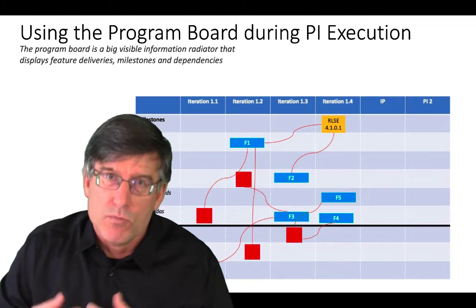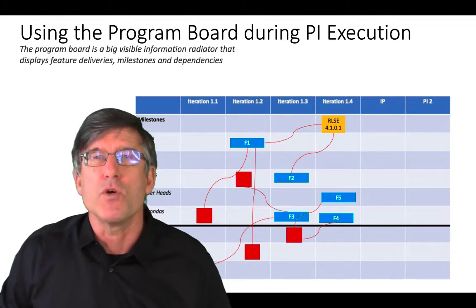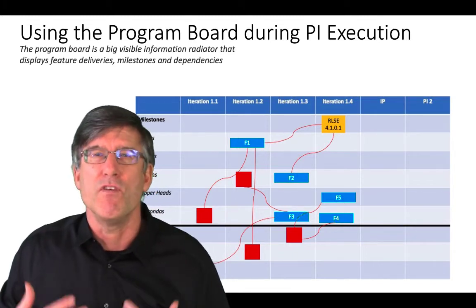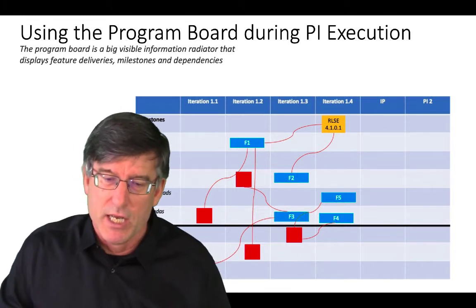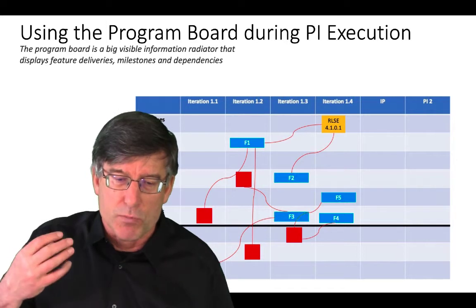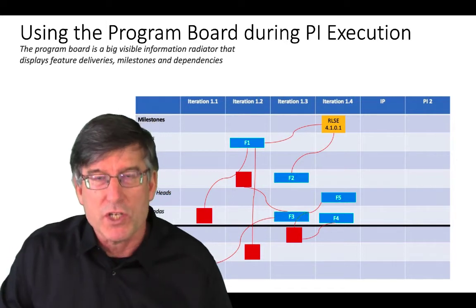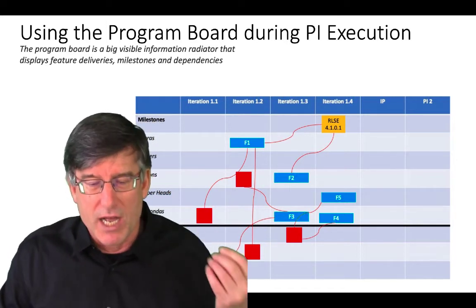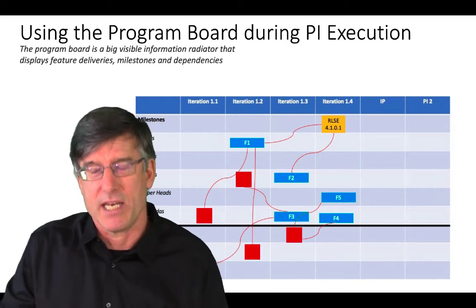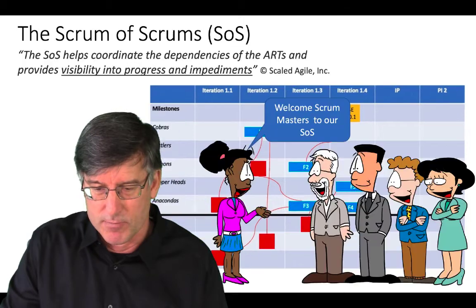The program board is what we refer to as a big visible information radiator. It displays when features are going to be delivered, the milestones, and dependencies.